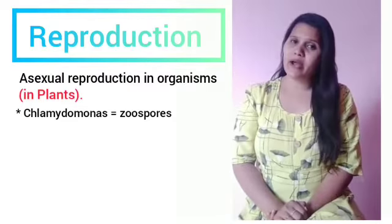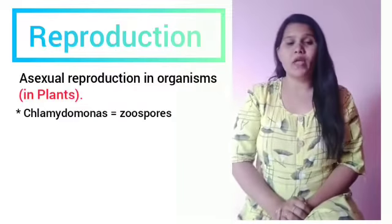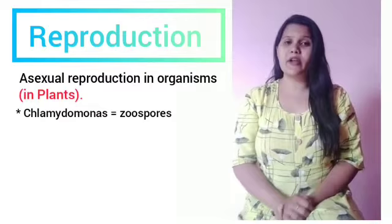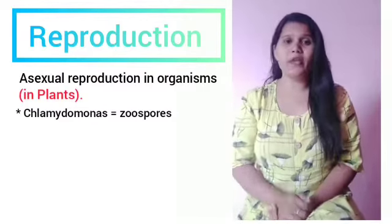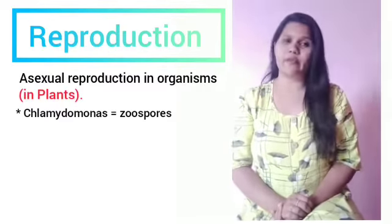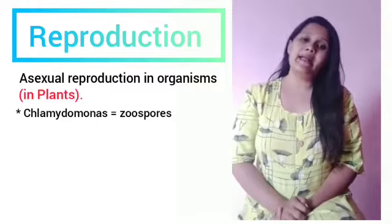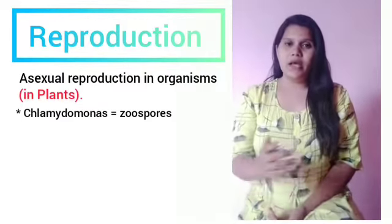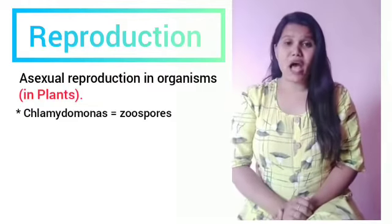During favorable conditions, the zoospores grow into mature cells and become new individuals. However, during unfavorable conditions, Chlamydomonas goes through sexual reproduction and produces its own offspring. Not only Chlamydomonas, but some fungi and algae also go through sexual reproduction.